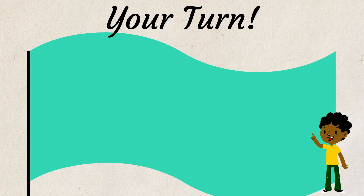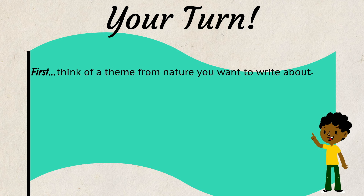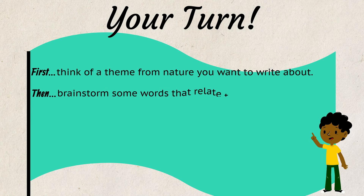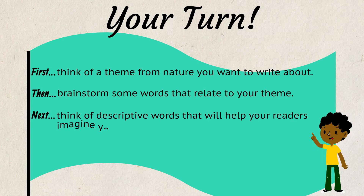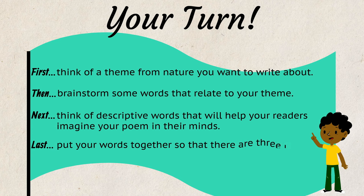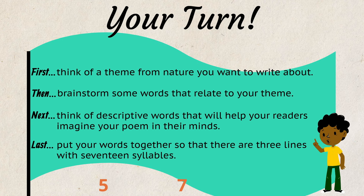Now, it's your turn to write a haiku poem. First, think of a theme from nature you want to write about. Then, brainstorm some words that relate to your theme. Next, think of descriptive words that will help your readers imagine your poem in their minds. Last, put your words together so that there are three lines with 17 syllables — five, seven, five.